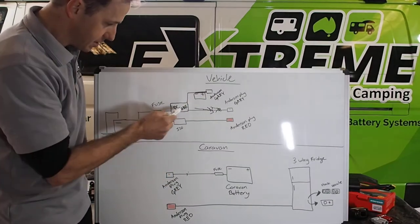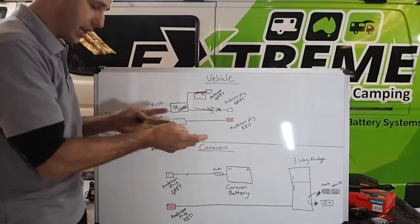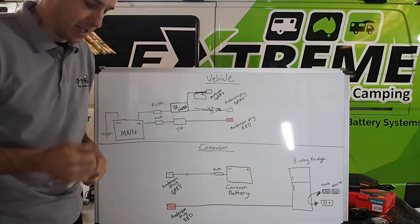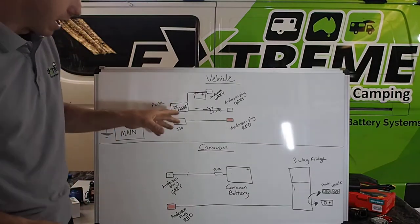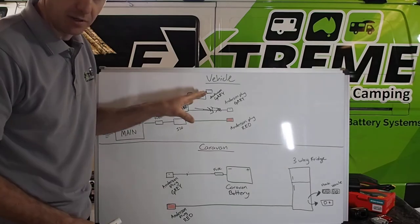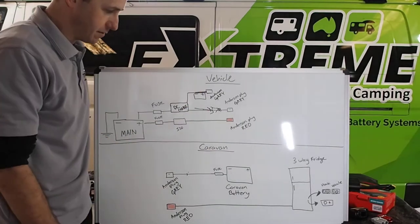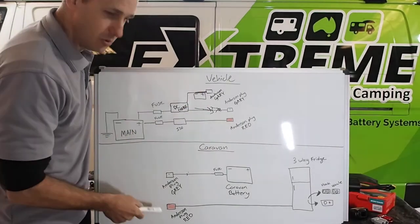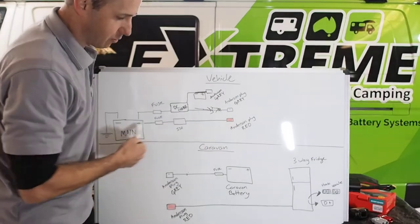Easy system. It's a very small modification to the standard system with the isolator. Except now we've just taken the isolator out and replaced it with a DC charger. So, this is a great way to get a charger in your system if you've got an aux battery in the vehicle and you want to charge your van as well. And, as you can see, there's still no crossover between the three-way fridge line.